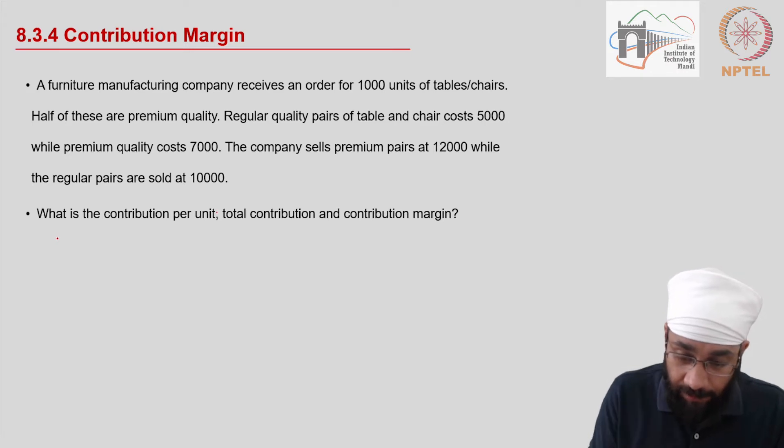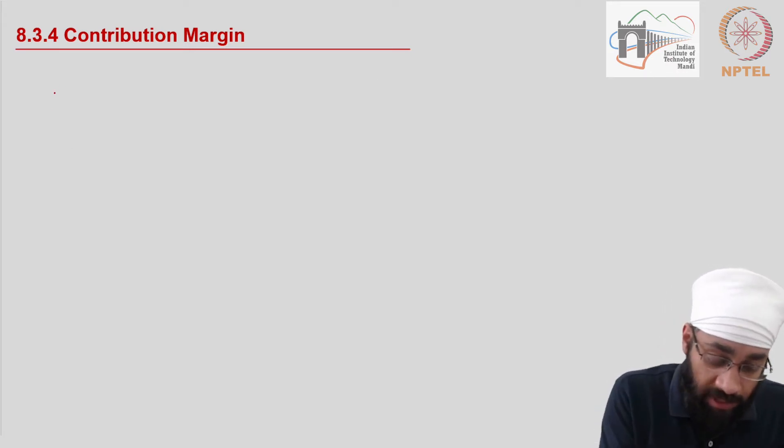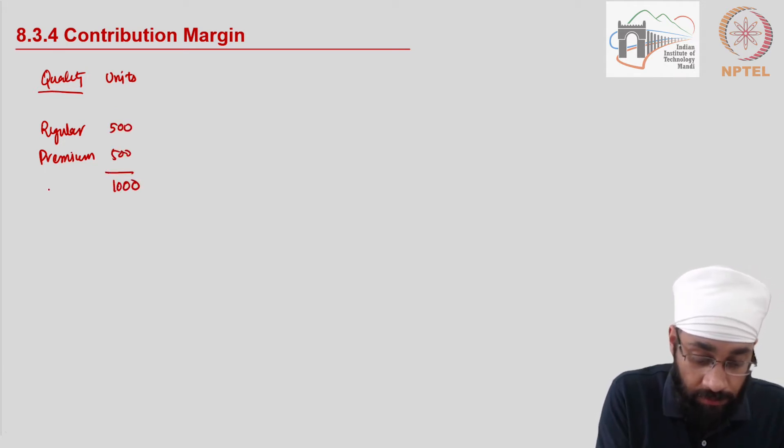We have number of units. So we have two types of units. Let me say quality. We have a regular quality and we have a premium quality. And then there are units. We have 500 each, so total units are 1000. This is total.